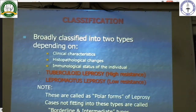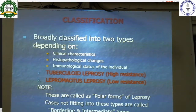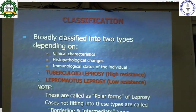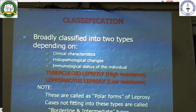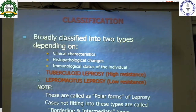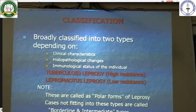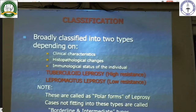Classification of leprosy: it is classified depending on clinical characteristics, histopathological changes, and the immunological state of the individual. It is classified into tuberculoid leprosy — wherein there is high resistance to the leprosy bacilli — and lepromatous leprosy — where there is low resistance. These are called the polar forms of leprosy. Cases not fitting into either classification are termed borderline or intermediate types.